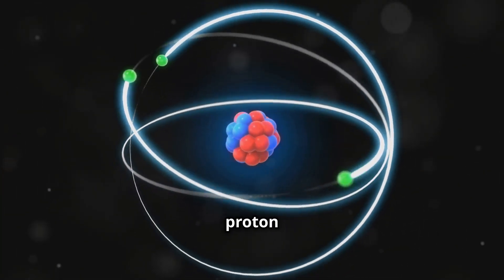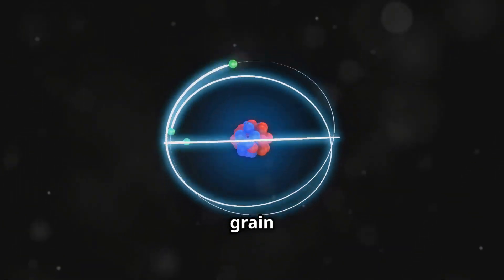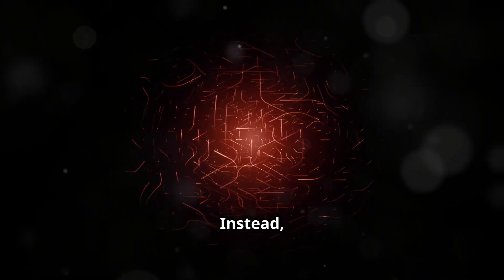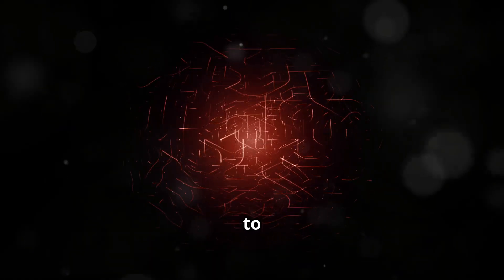To give you an idea, if a proton were the size of a football field, a quark would be smaller than a grain of sand. In fact, they're so small that we've never actually seen a quark directly. Instead, we rely on indirect evidence from high energy particle collisions to study them.